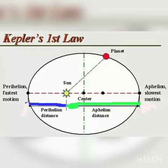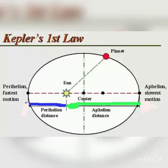First, we are going to discuss about Kepler's 1st law. This law is also known as the law of orbits. According to Kepler's 1st law, all the planets revolve around the sun in elliptical orbits having the sun at one of the foci. The blue line indicates perihelion and the green line indicates aphelion. The point at which the planet is closest to the sun is known as perihelion, and the point at which the planet is furthest from the sun is known as aphelion.